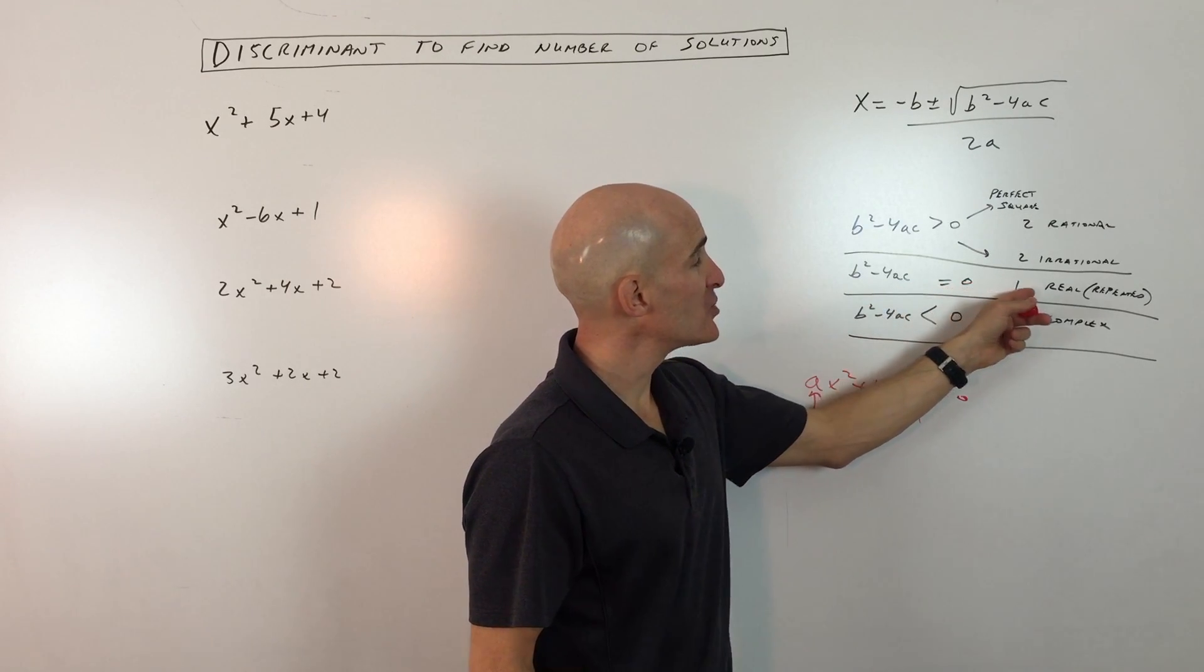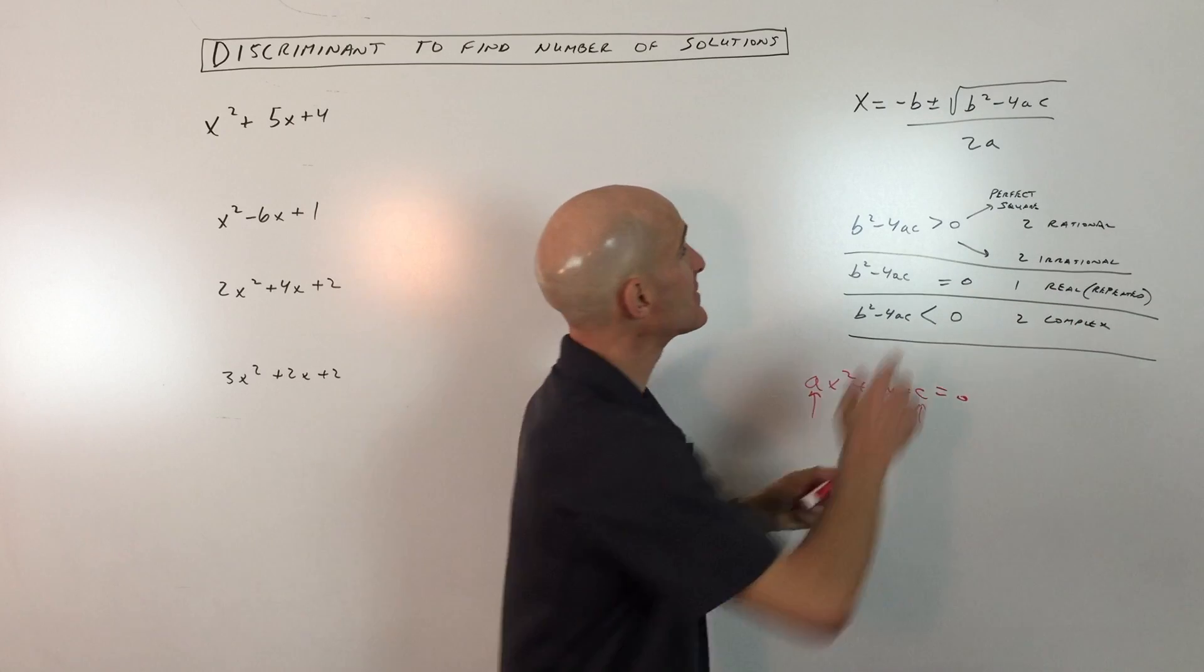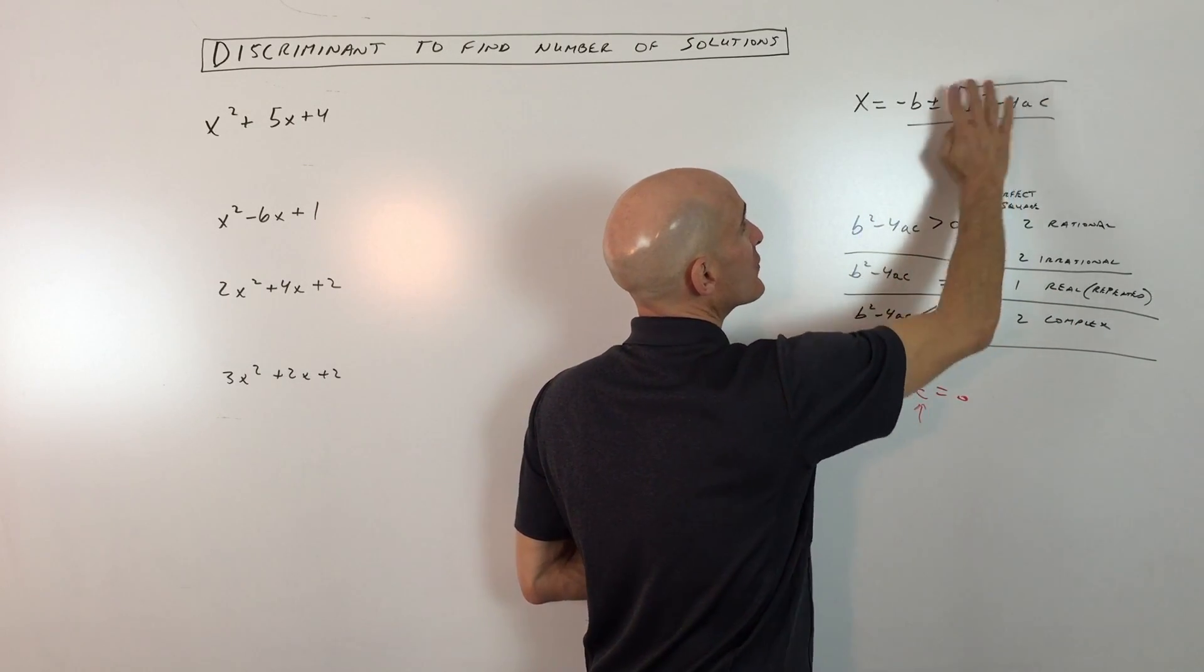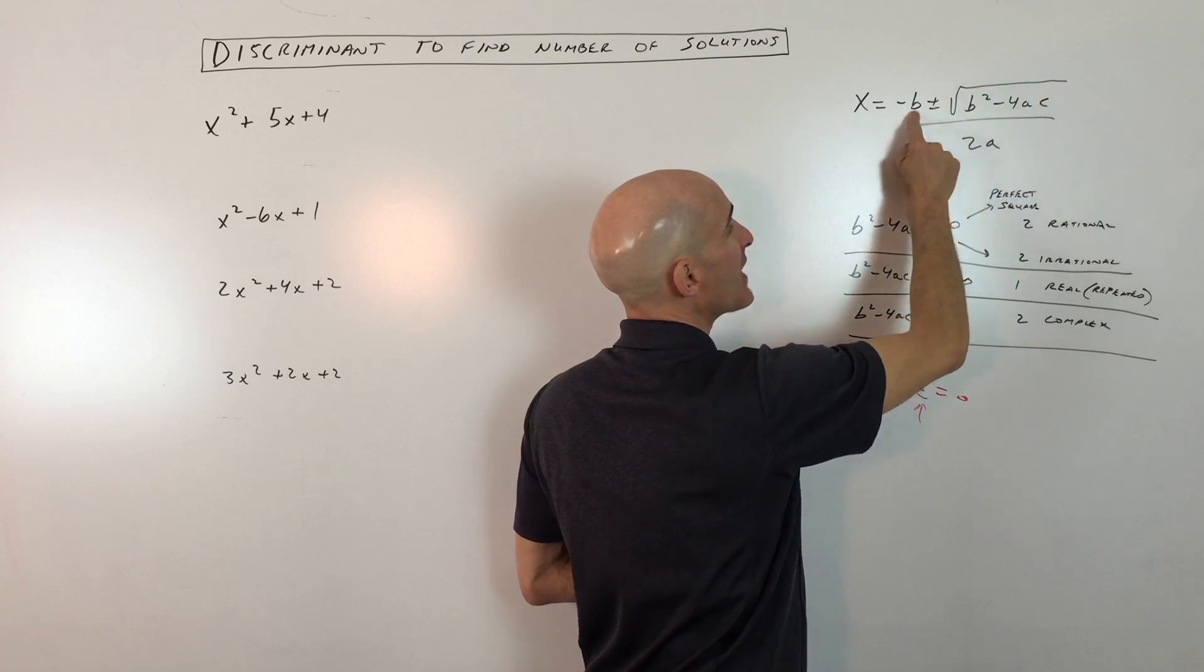Now, if it comes out to zero, you just get one real solution. And the reason is, is if this is zero, whether you add zero or you subtract zero, this quantity is canceling out, you're just going to have b over 2a.